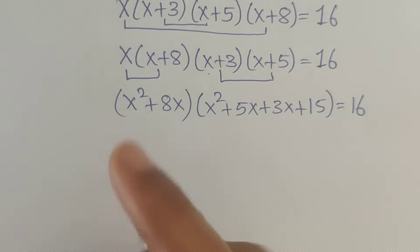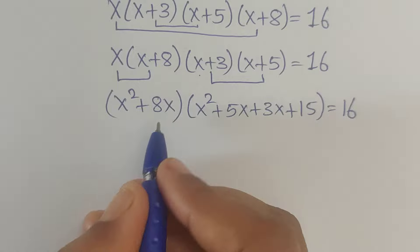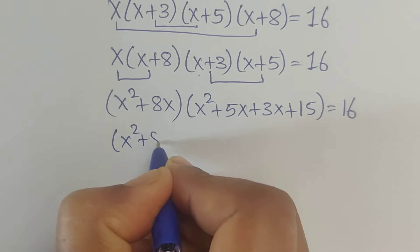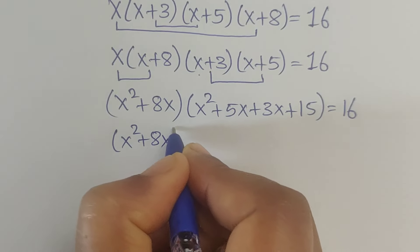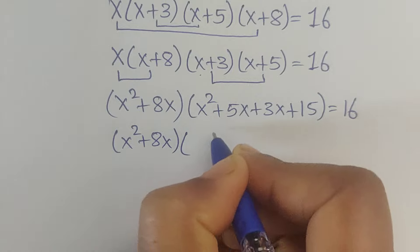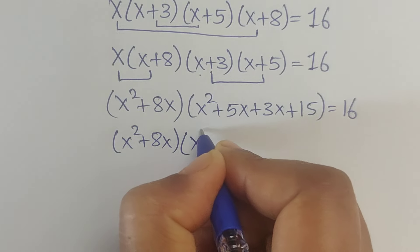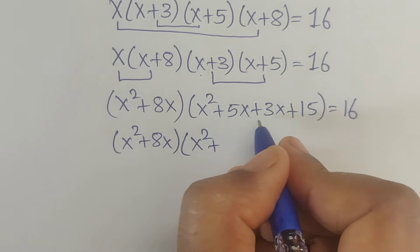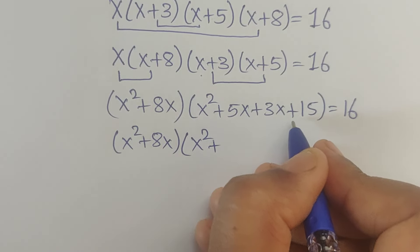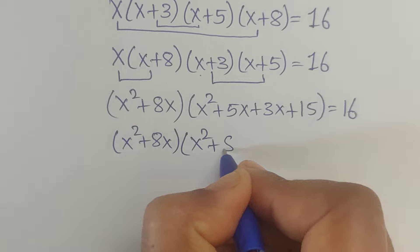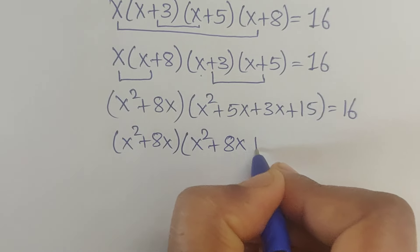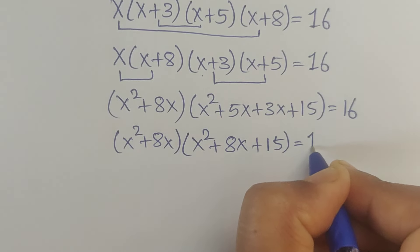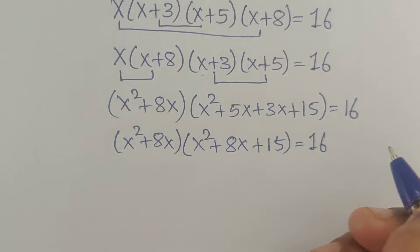So now we have (x squared plus 8x) times (x squared plus 5x plus 3x, which equals 8x, plus 15) equals 16.